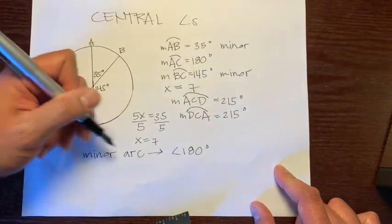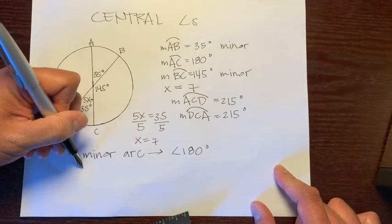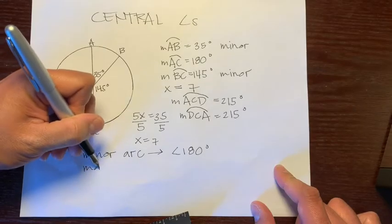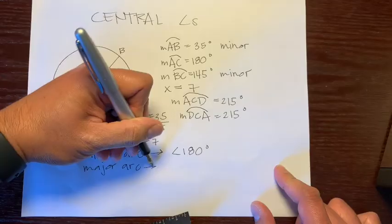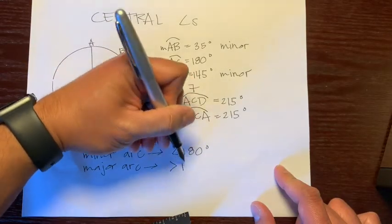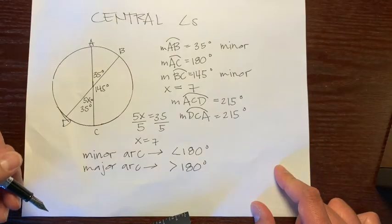So what do you think an arc that's greater than 180 degrees is? That would be called opposite of minor would be major. So a major arc is greater than 180 degrees.